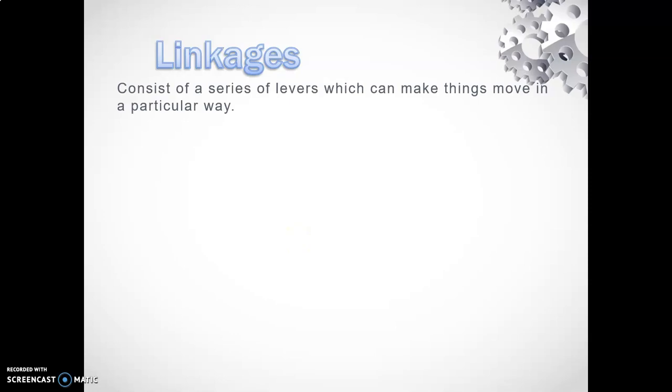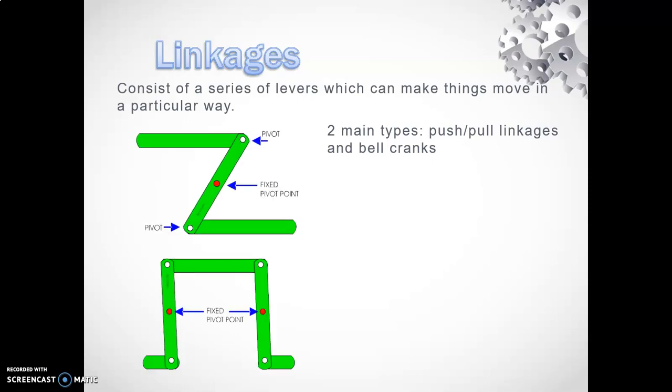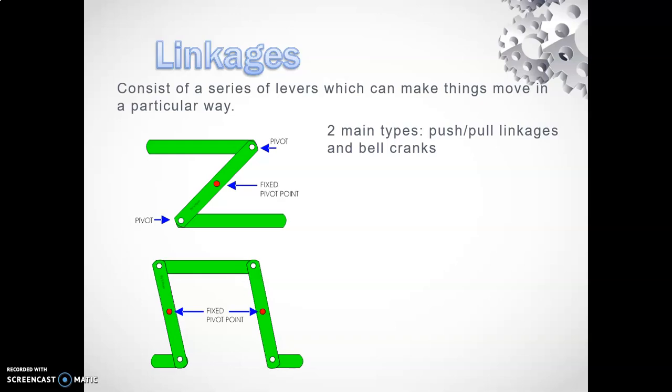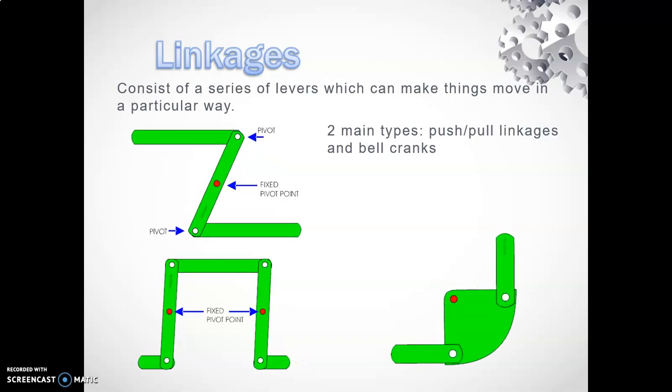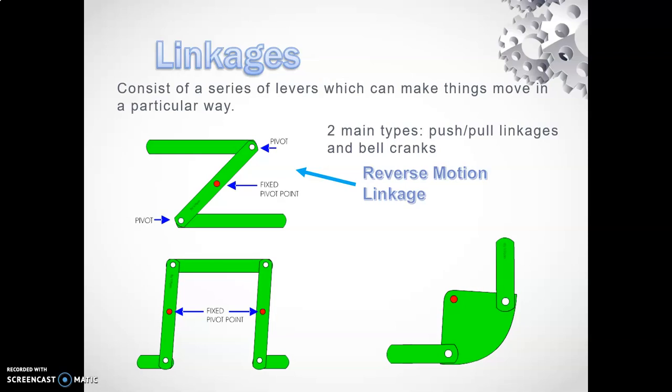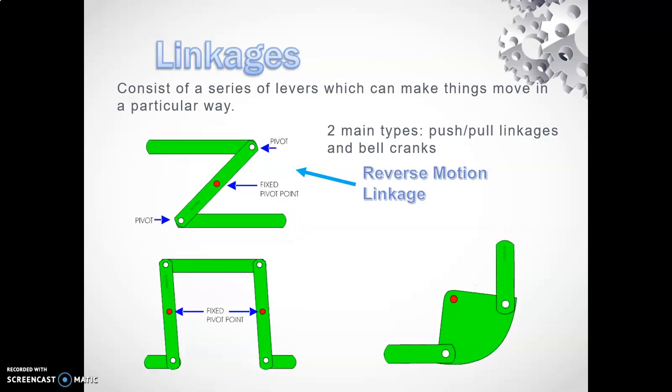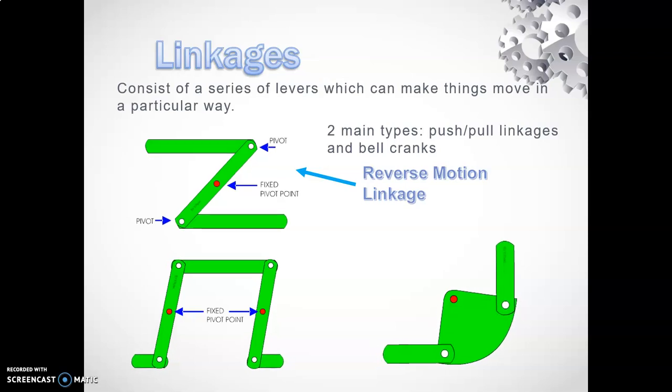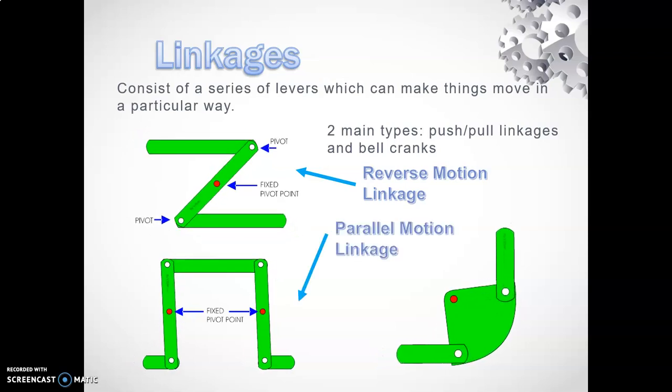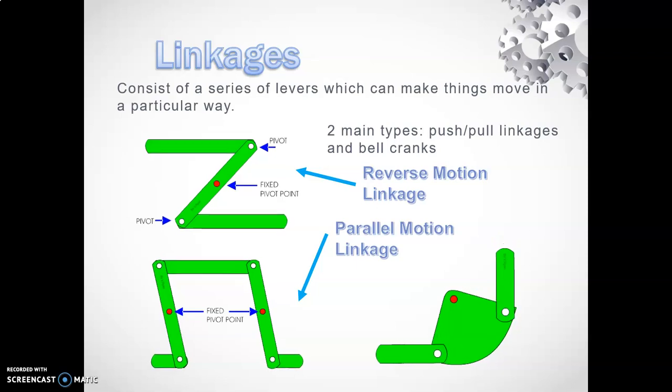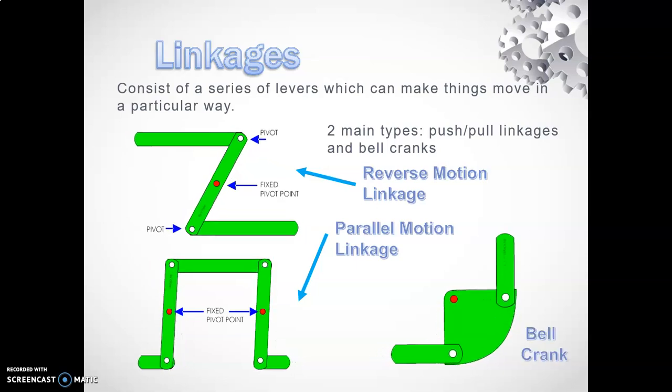Let's get on to linkages. These consist of a series of levers that make things move in a particular way. We have two main types: push-pull linkages and bell cranks. This push-pull linkage is called a reverse motion linkage because the input comes in and the opposite output occurs. This one's called a parallel motion linkage, and here's our bell crank.